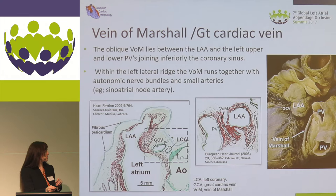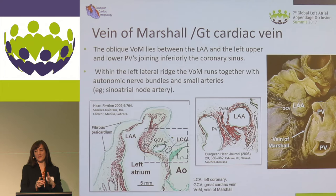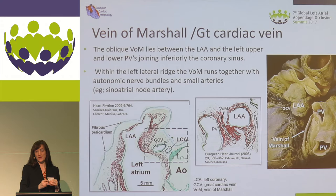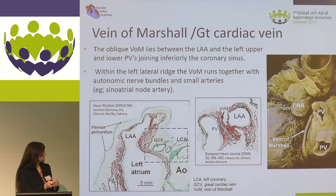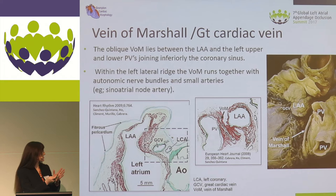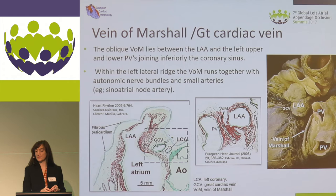Other features close to the left atrial appendage: we can see the great cardiac vein (GCV) coming over, and we can see the vein of Marshall itself. The oblique vein of Marshall lies between the appendage itself and the pulmonary veins, and then it joins into the coronary sinus. Within that left lateral ridge, that's where the vein of Marshall will run, as we can see in these histology sections — in between here we've got the VOM, with the pulmonary veins and the left atrial appendage on either side. Here we've got the fibrous pericardium covering the appendage itself, and we can see the position of the great cardiac vein on the left.